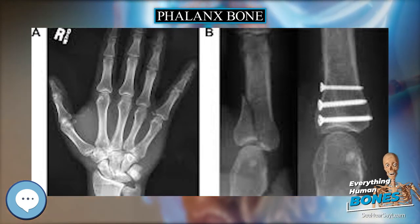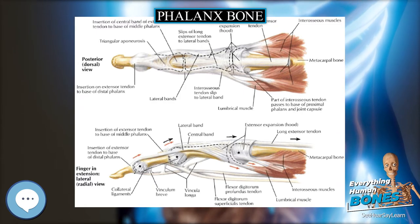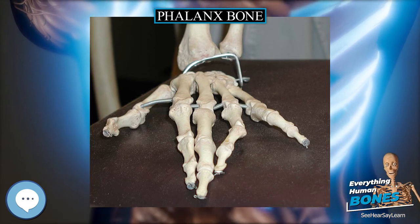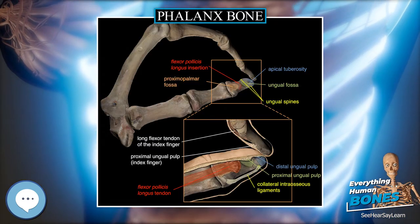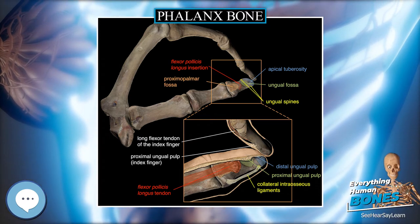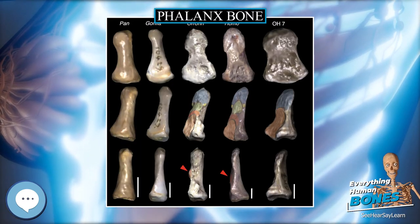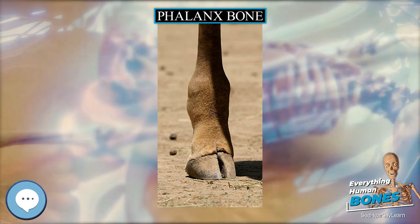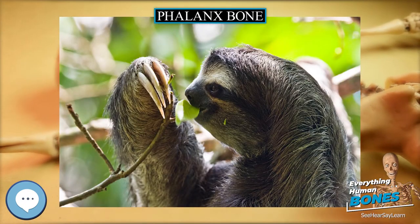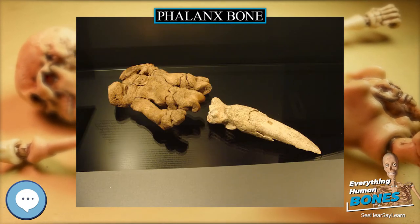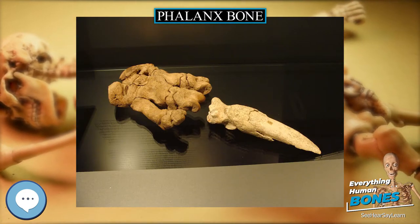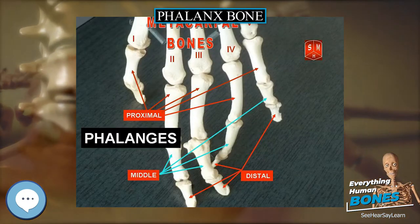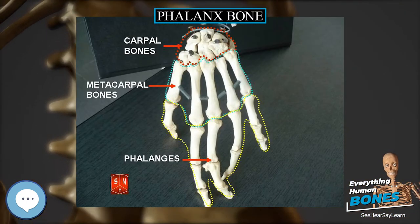Distal Phalanx. In the hand, the distal phalanges are flat on their palmar surface, small, and with a roughened, elevated surface of horseshoe form on the palmar surface. The flat, wide expansions found at the tips of the distal phalanges are called apical tufts. They support the fingertip pads and nails. The phalanx of the thumb has a pronounced insertion for the flexor pollicis longus, asymmetric towards the radial side, an ungual fossa, and a pair of unequal ungual spines, the ulnar being more prominent. This asymmetry is necessary to ensure that the thumb pulp is always facing the pulps of the other digits, an osteological configuration which provides the maximum contact surface with held objects.